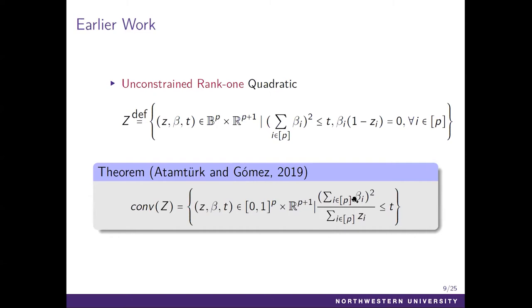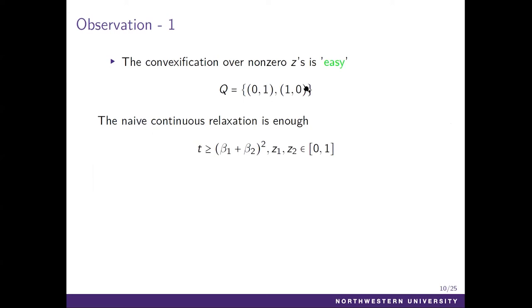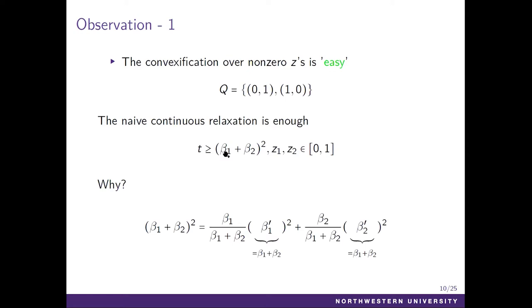Based on previous results, we make some important observations. The first observation is that the convexification over the non-zero indicator variable set is somehow easy. For example, suppose we have a two-element set Q which is {(0,1), (1,0)}. The simplest continuous relaxation is enough — we just relax the binary requirement for z_i and get the convex hull for our non-zero indicator variables. To see why, take the simple rank-one case: suppose we have arbitrary numbers theta_1 and theta_2, then we can shift the sum of the two into one entry, take the convex hull, and represent it this way for arbitrary theta_1 and theta_2.